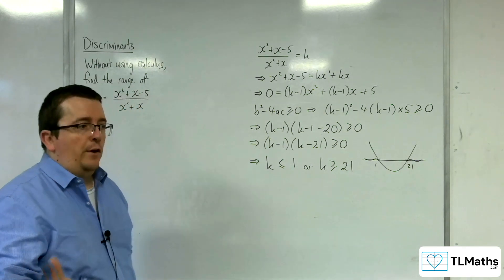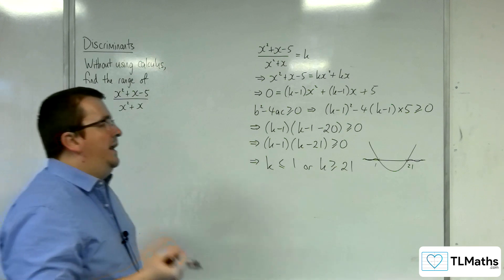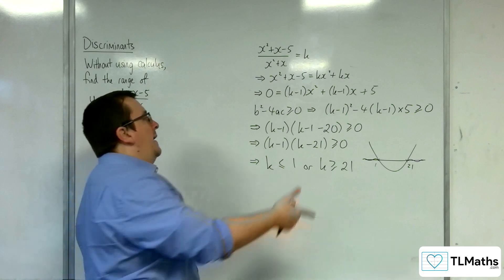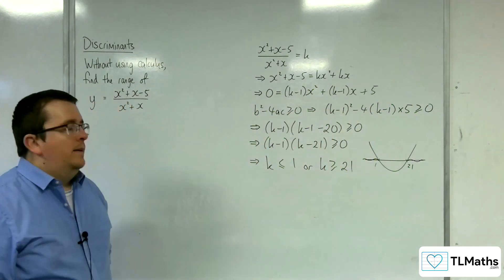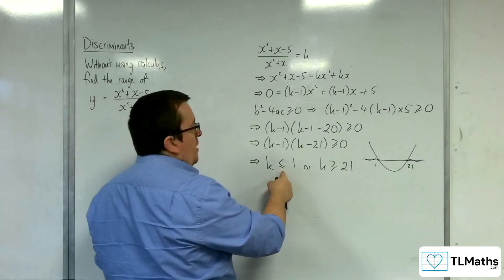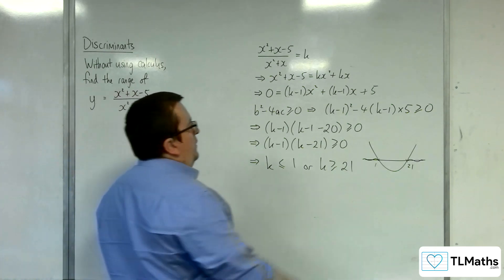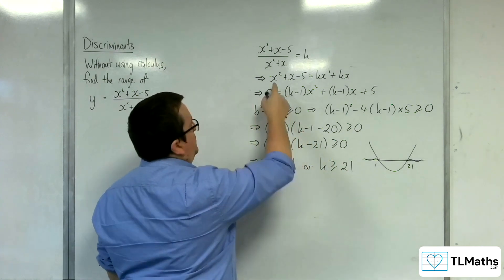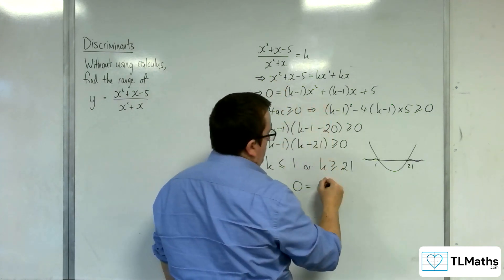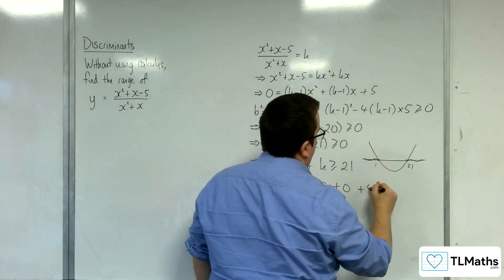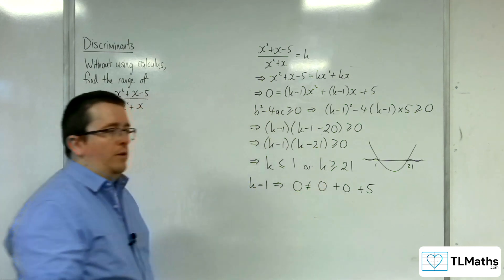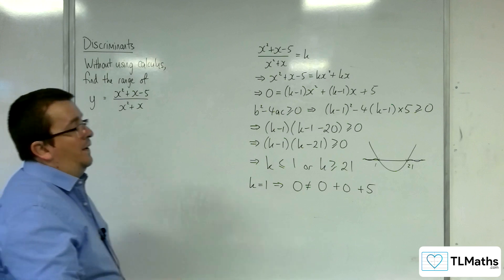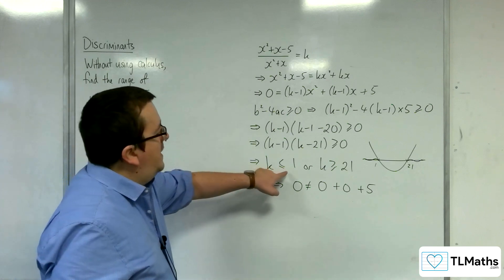Now, if you've watched the previous two videos on this, you'll know that we need to be careful, because we need to look at the coefficient of x squared. When k equals 1, we no longer have a quadratic, and so this discriminant method won't work. Now, k equals 1 is actually on our boundary here. The discriminant method is saying that these are the solutions. But when k equals 1, if I substitute that into my quadratic, I get 0 is equal to 0 plus 0 plus 5. And clearly, 0 is not equal to 5. So, we get an inconsistency — when k is equal to 1, the curve and the line do not intersect.